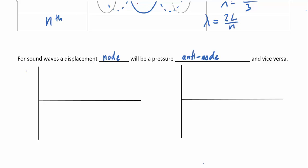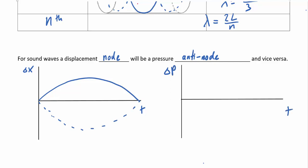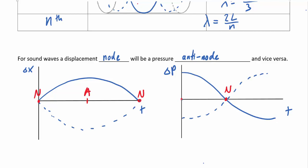To illustrate: if I plot displacement versus time I see a variation where the center has maximum displacement. But if I plot pressure differential versus time, the pattern is inverted — I have nodes at either end and an antinode in the middle becomes a node, while the ends become antinodes.